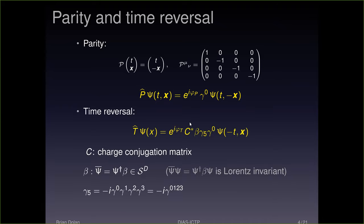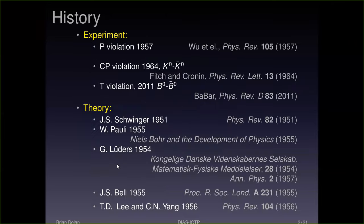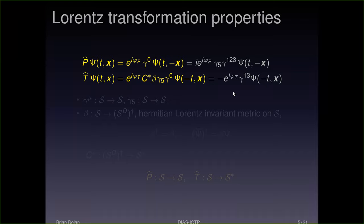Psi-bar psi is Lorentz invariant. Beta is a Hermitian matrix, so the dagger of psi-bar is beta psi. The charge conjugation matrix C-star multiplies beta from the left, so C-star maps from the Hermitian conjugate of the dual space to S-star. To summarize: parity maps from S to S, and time reversal maps from S to S-star. This is the famous anti-unitary behavior of time reversal — it complex conjugates the representation of the Lorentz group on the spinors.